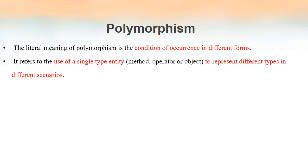The best example to explain polymorphism is the plus operator. If you use the plus operator along with two numbers, it will work as the addition operator and we will get the sum of those two numbers. On the other hand, if you use the plus operator with two strings, it will combine those two strings into a single one. The same operator is used for two different functionalities — that can be considered as an example of polymorphism.